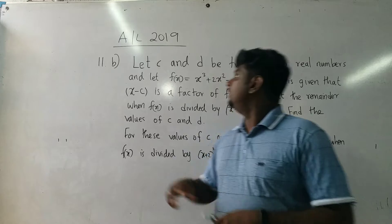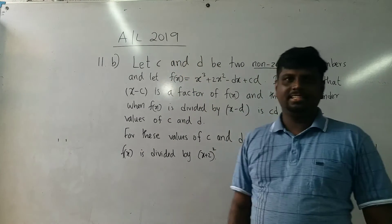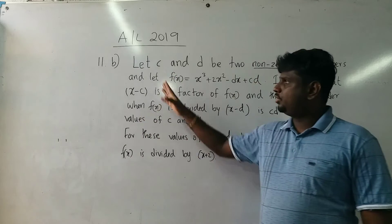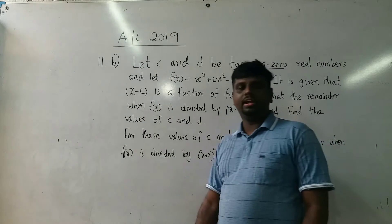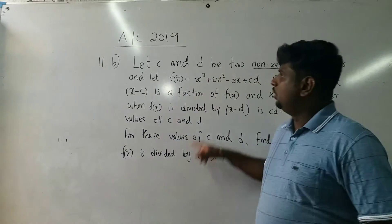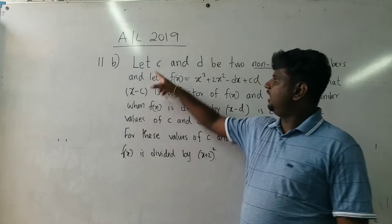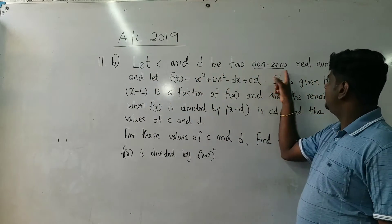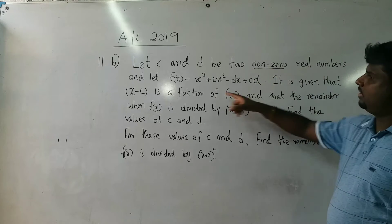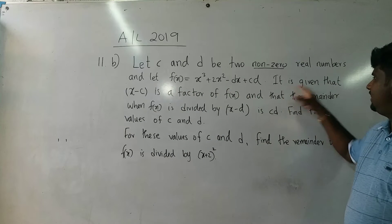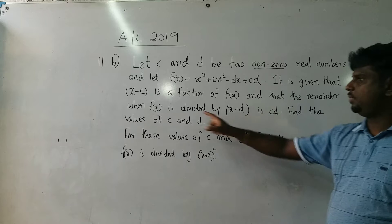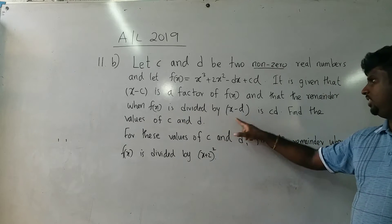This is an A-level 2019 past paper, question 11b, regarding the Remainder Theorem. Let c and d be two non-zero real numbers, and let f(x) be a given polynomial. It is given that x minus c is a factor of f(x), and that the remainder when f(x) is divided by x minus d is c.